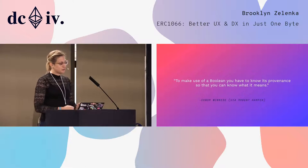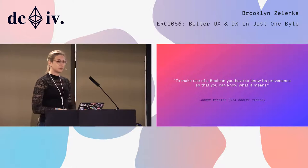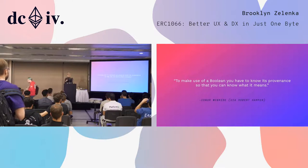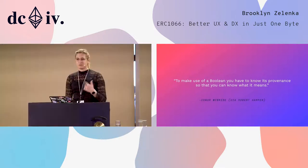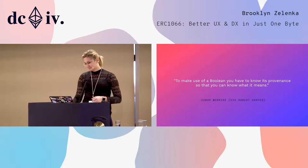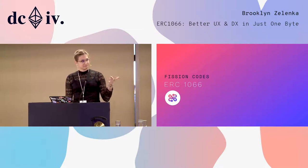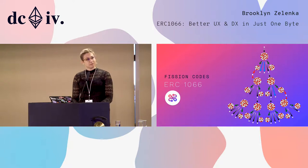There's a great Connor McBride quote about Boolean blindness. Booleans are great but they just don't give you enough context — you need to understand the exact situation in which the Boolean was generated to know what it actually means. Hence, ERC 1066 Fission Codes, which help us write smart contracts that look more like this.